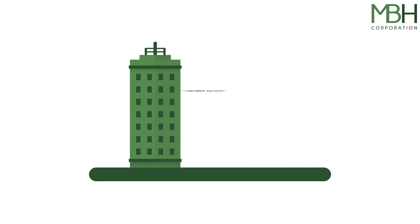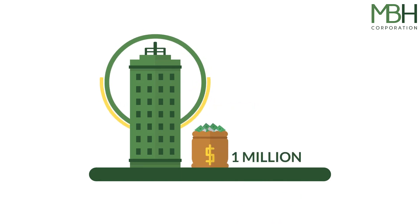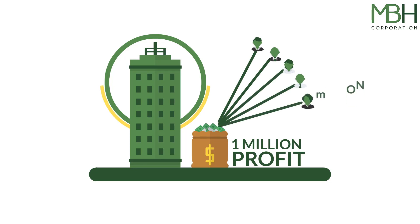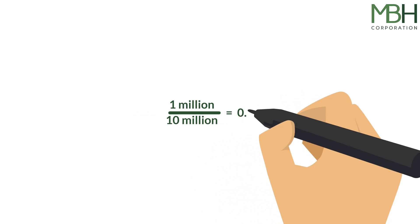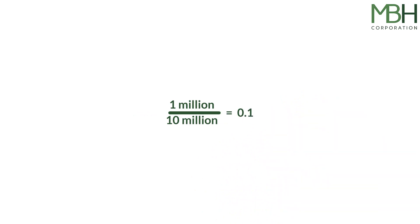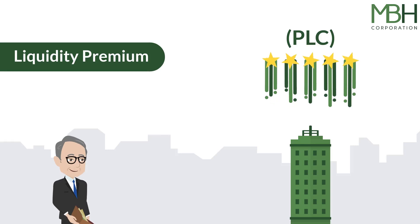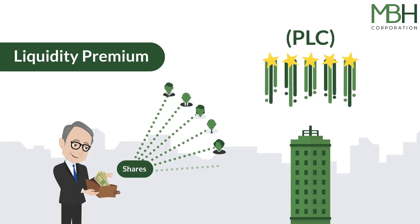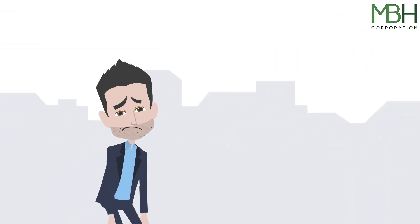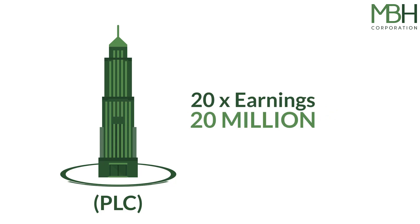Now consider a publicly listed company, known as a PLC, in a similar situation. We have a PLC doing a million in profit, but because it's publicly listed it typically might have about 10 million shares divided among a number of shareholders. That gives us one million profit divided by 10 million shares, making earnings per share just 0.1. However, valuations of PLCs are much higher than small businesses for several reasons, including the liquidity premium — investors pay a premium to quickly and easily sell their shares, something not possible with private shares. In our example, the PLC is trading at 20 times earnings, valuing it at 20 million.